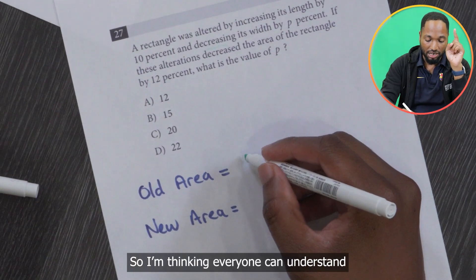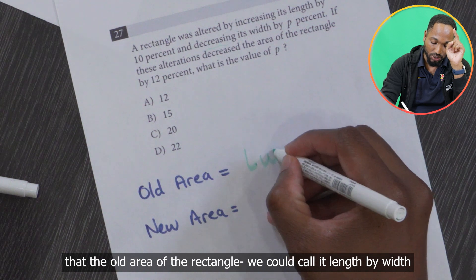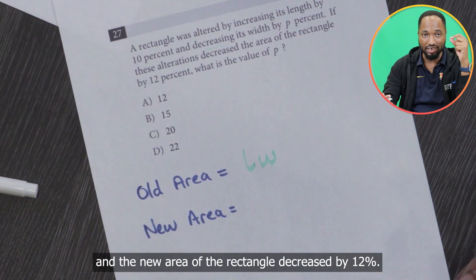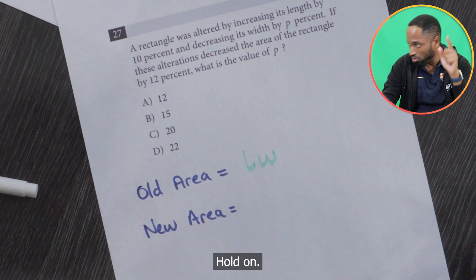I'm thinking everyone can understand that the area of the rectangle we could call it length by width, and the new area of the rectangle decreased by 12%.